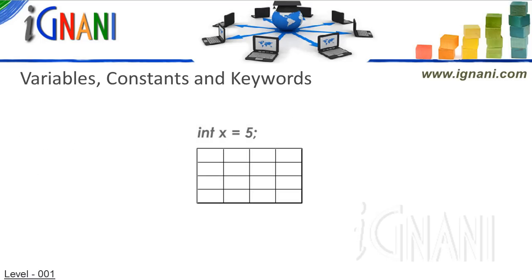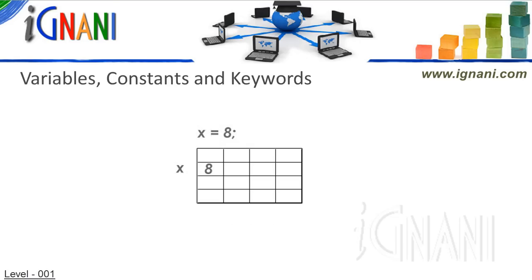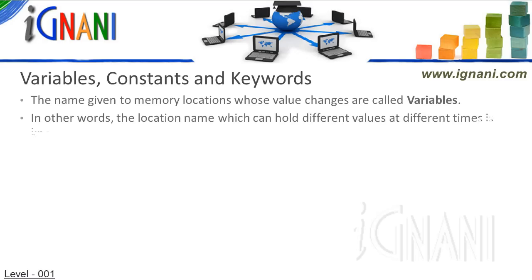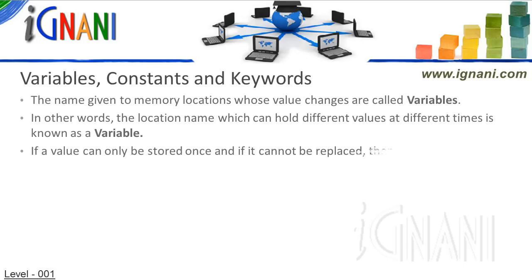For example, a value 5 is stored in a memory location, which we name x. In our code we can use x to refer to the memory location or to access the value in that memory location, as in this printf statement. Now if we store a new value, say 8, in the same memory location, the old value will be replaced, but the name given to the memory location is still x. Since the value stored in such memory locations may change, the name given to such locations are called variable names. The location name which can hold different values at different times is known as a variable. If the value can only be stored once and cannot be replaced, then such location names are known as constants.